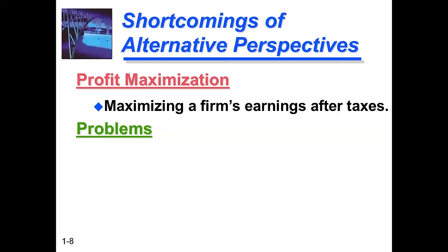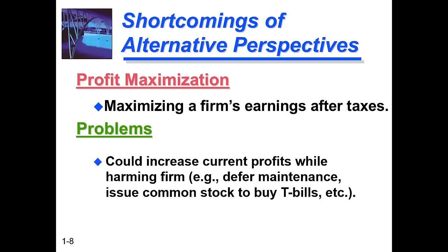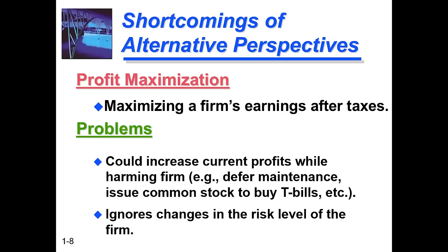What problems do we face with profit maximization? Profit maximization may be high in the short term, but it leads to long-term loss. For example, if there is no maintenance expense, the profit shown will definitely be high — but this harms the long term. Also, common stock issues can temporarily boost profit. Second shortcoming: we ignore changes in the risk level of the firm. When we focus on profit maximization, we ignore whether risk is very high, medium, or low, and sometimes we have to face consequences.